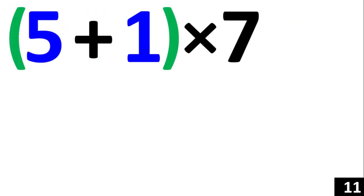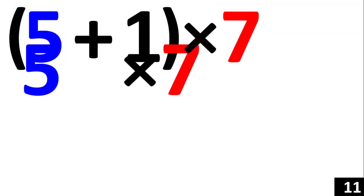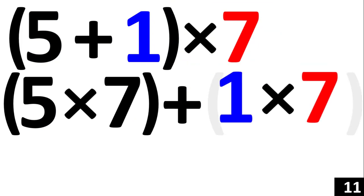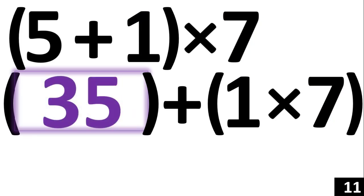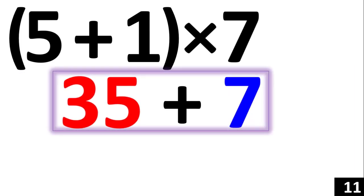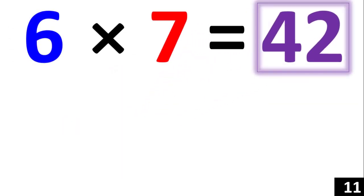6 times 7 is the same thing as 5 plus 1, times 7. Using the distributive property, we now have 5 times 7 plus 1 times 7. 5 times 7 is equal to 35, and 1 times 7 is equal to 7. Adding them together, 35 plus 7 is equal to 42. Therefore, 6 times 7 is equal to 42.